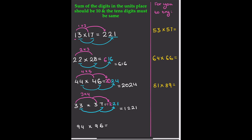Now we're on to 94×96. We do 4×6 = 24. Then multiply 9 by its next highest number, which is 10: 9×10 = 90. So the answer is 9024.